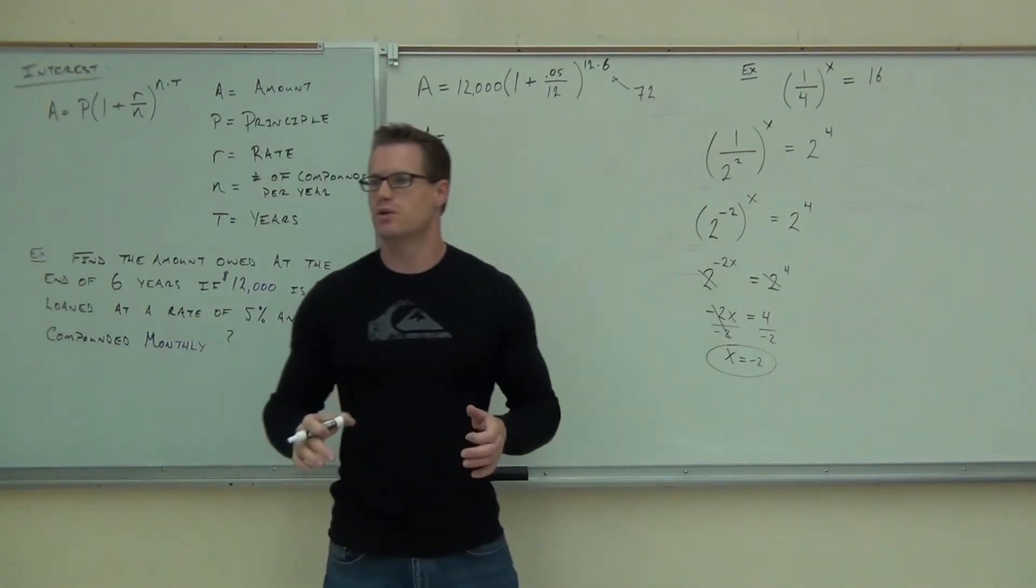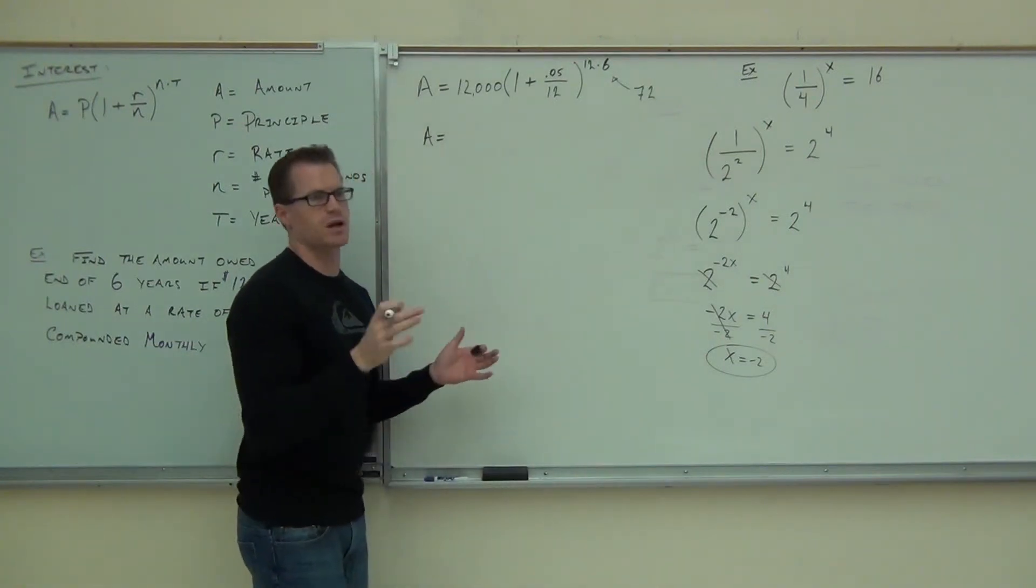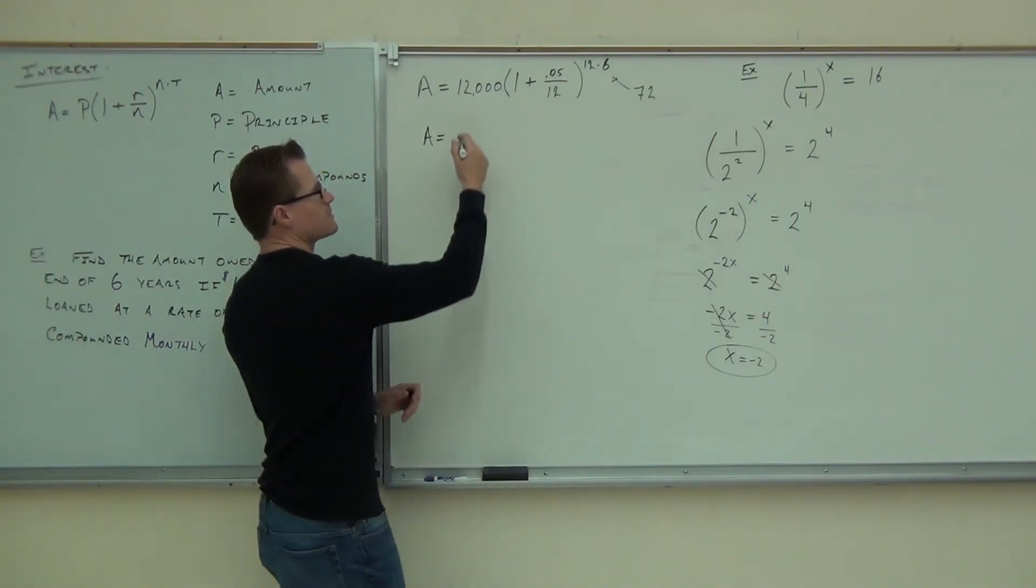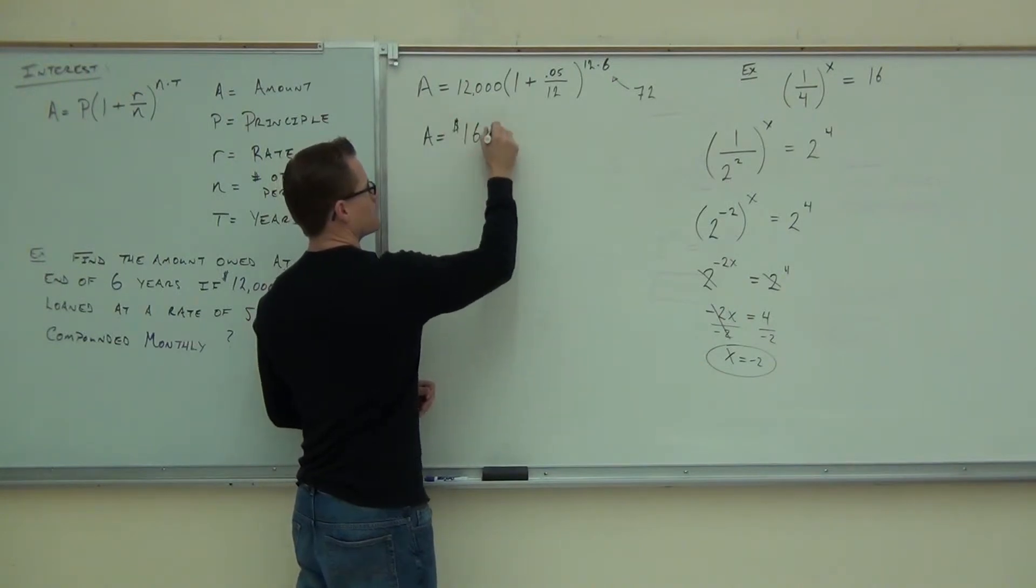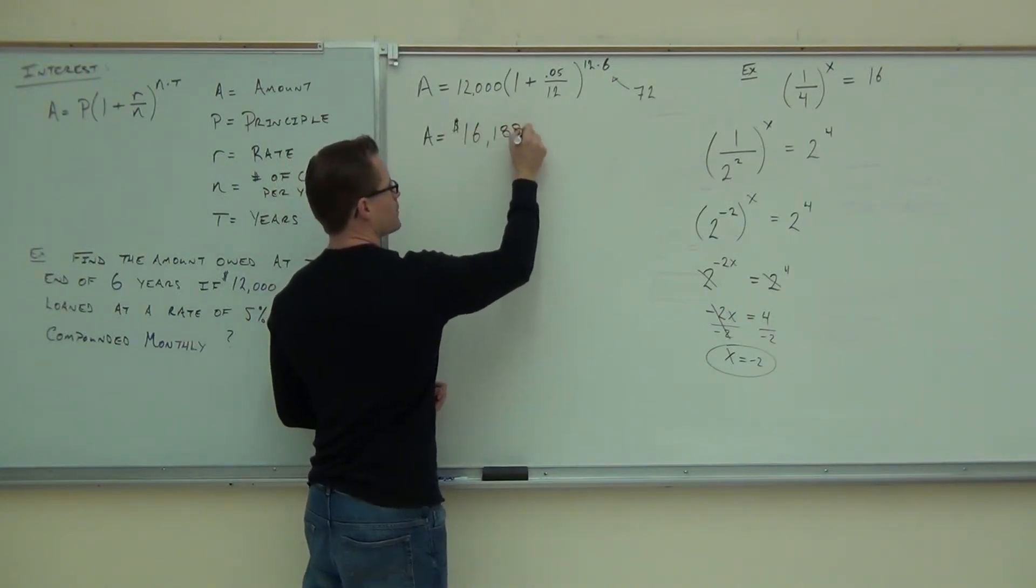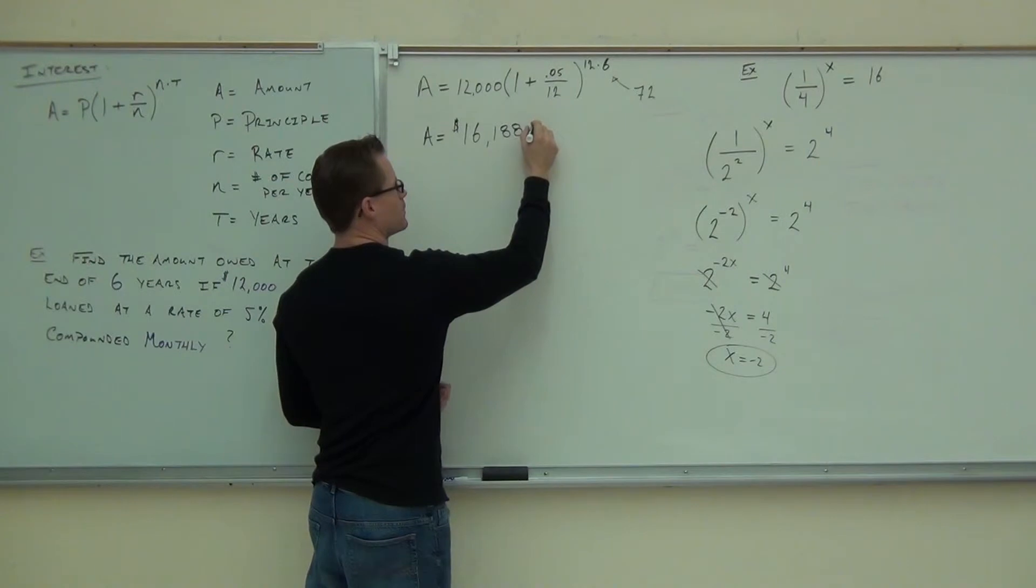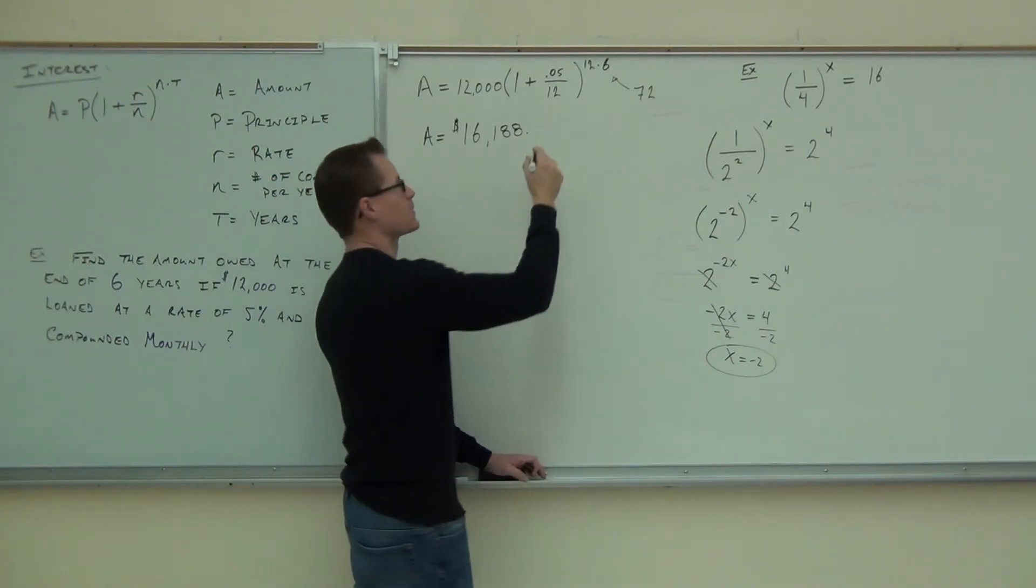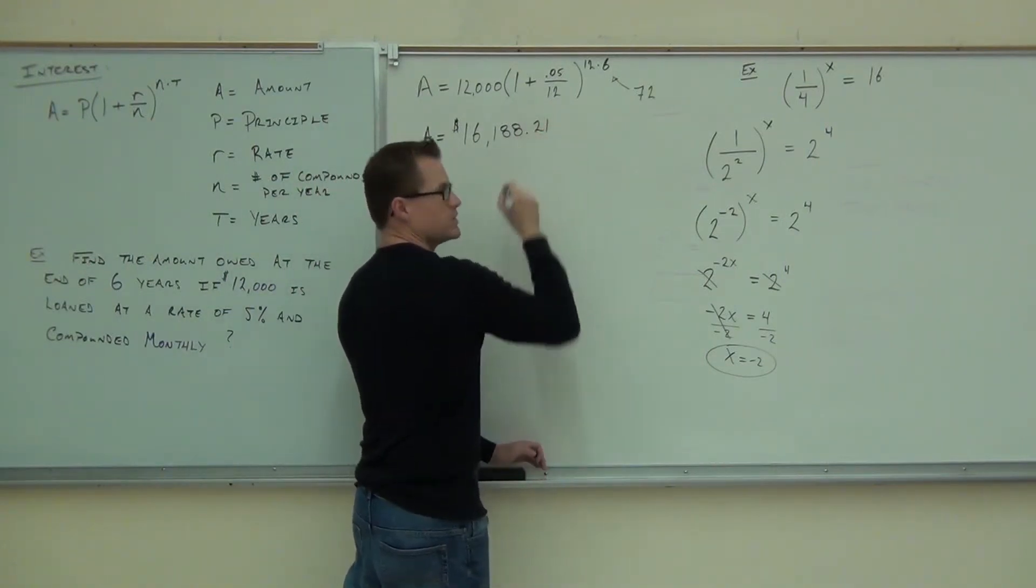If you didn't catch up the first time, watch that video again. Come and see me after class, and I'll show you how to use your calculator. How much is it? 16,000, 188 point 21. Is that rounded correctly? Yeah. Okay. You need to do the penny accurate.